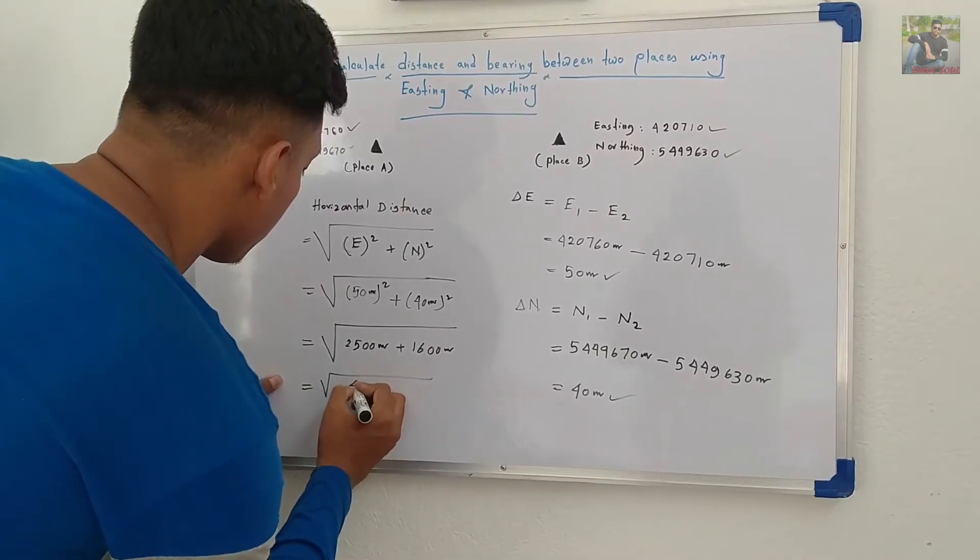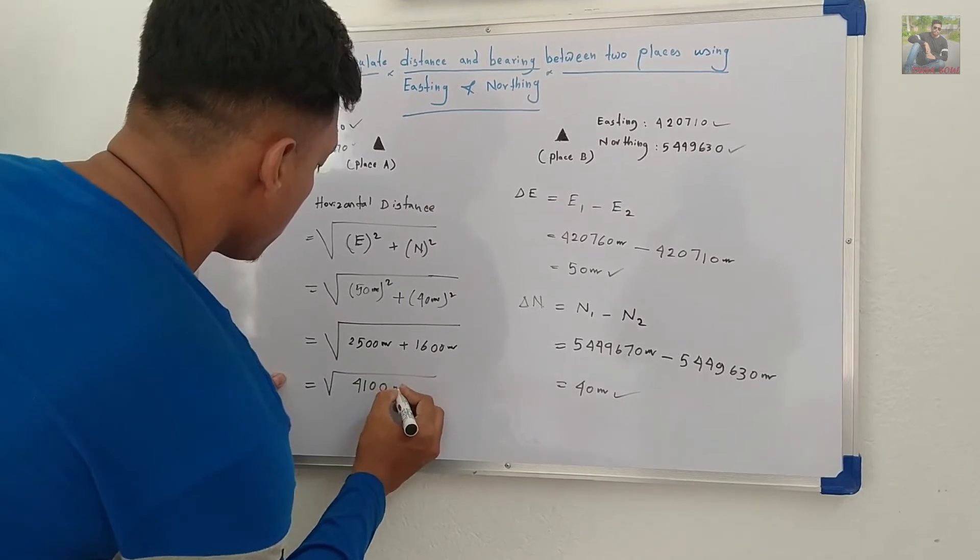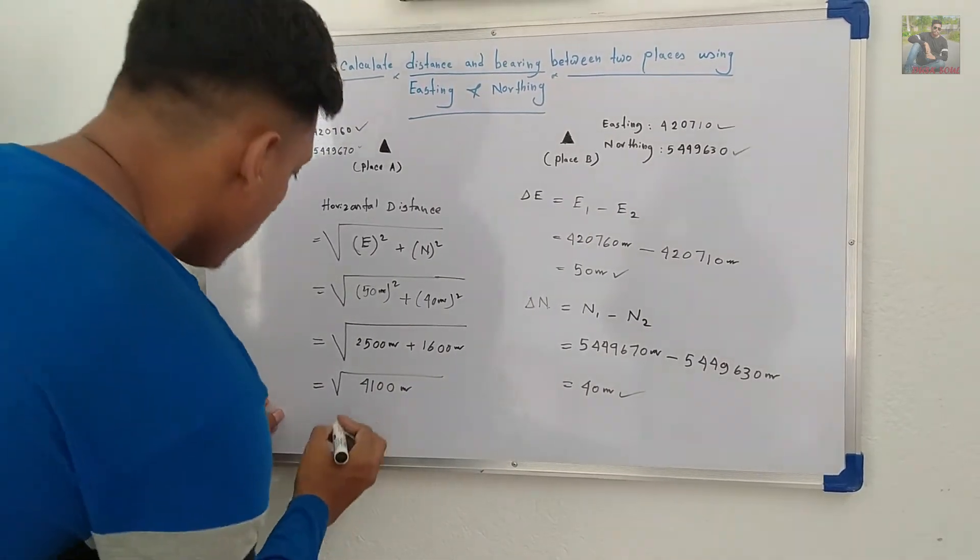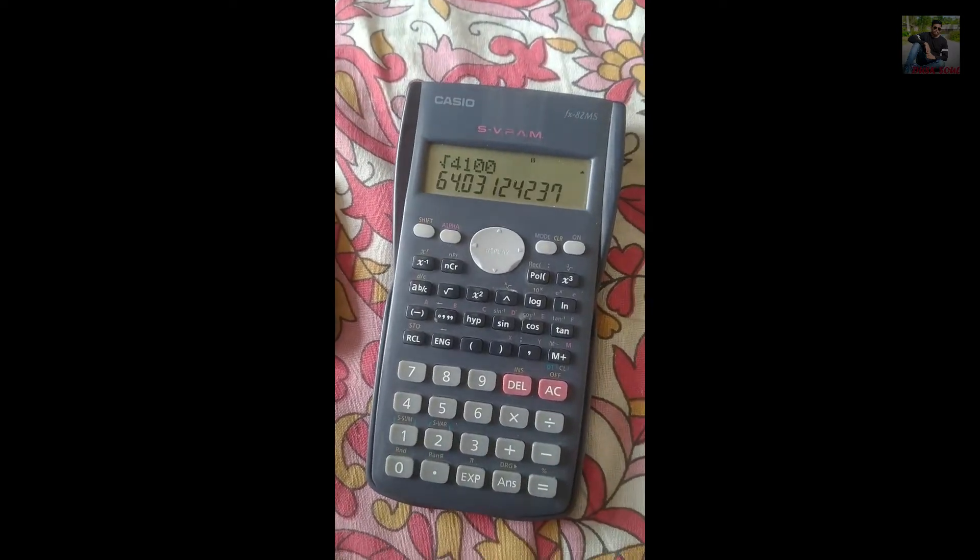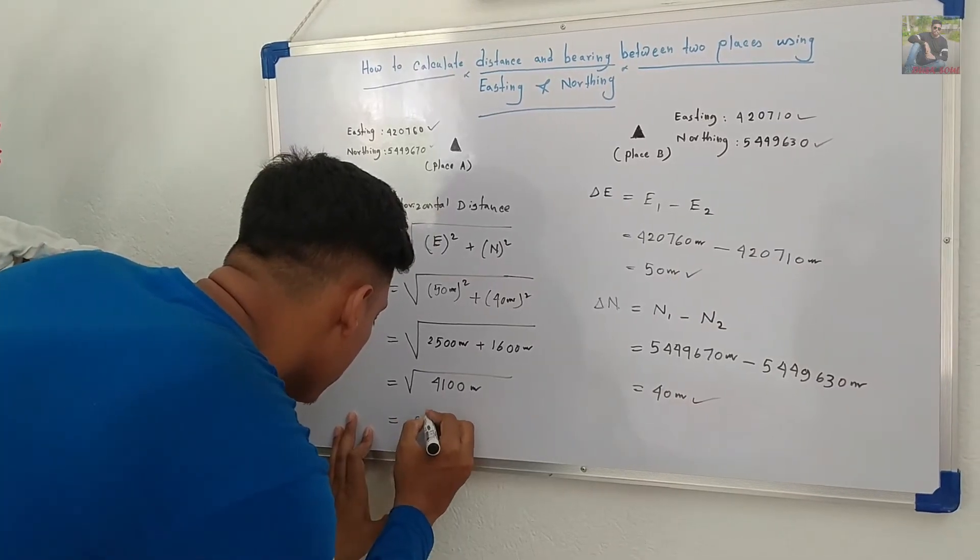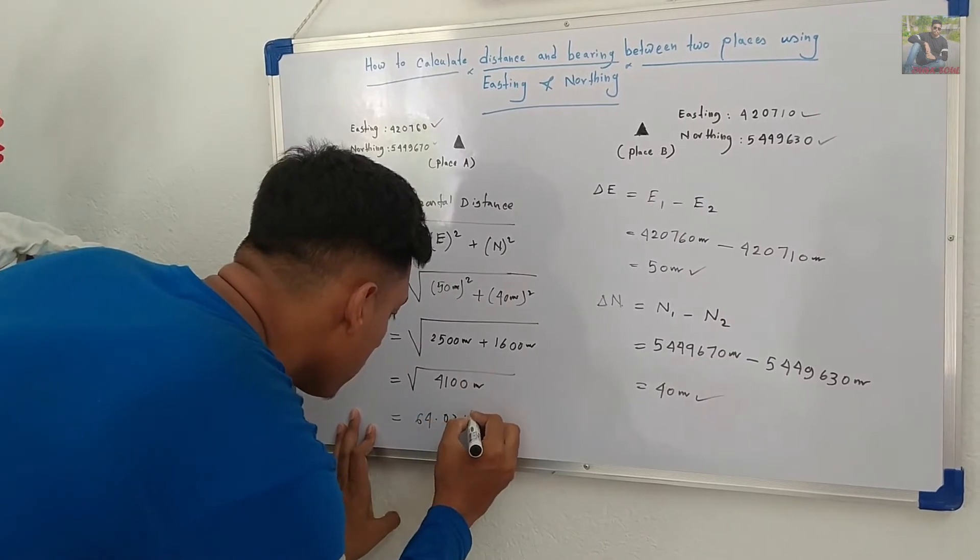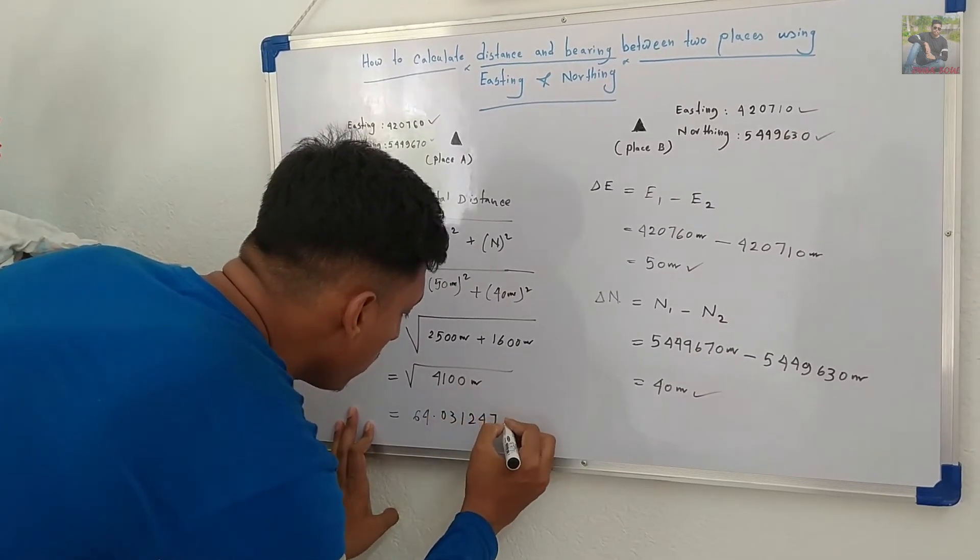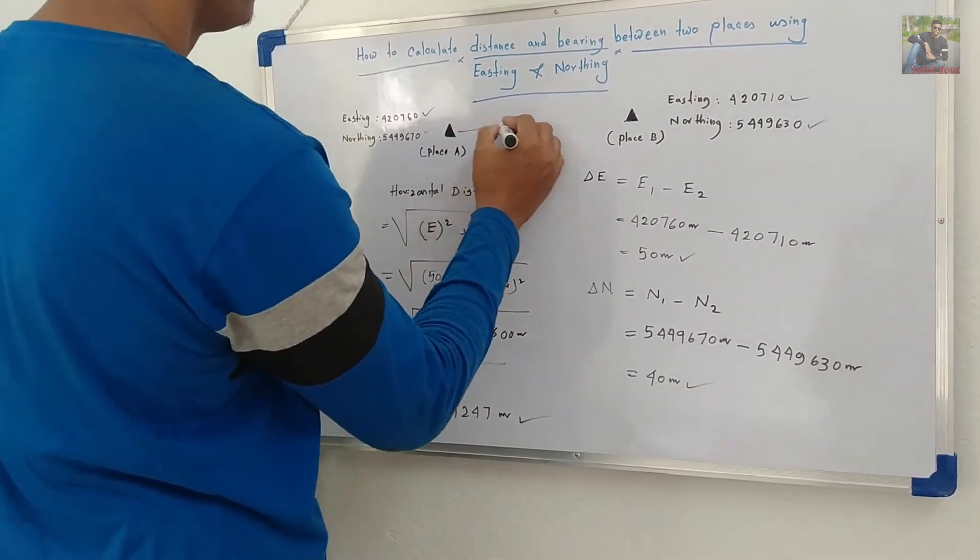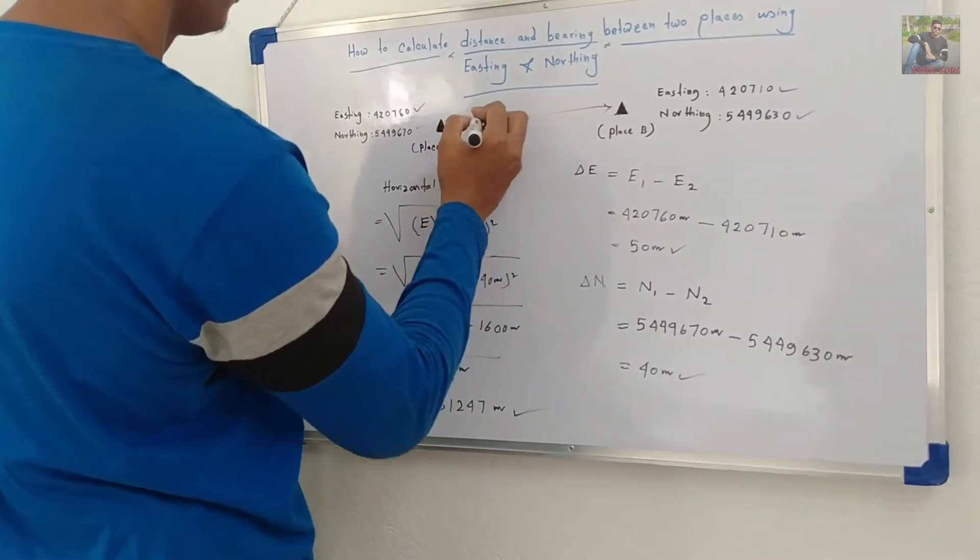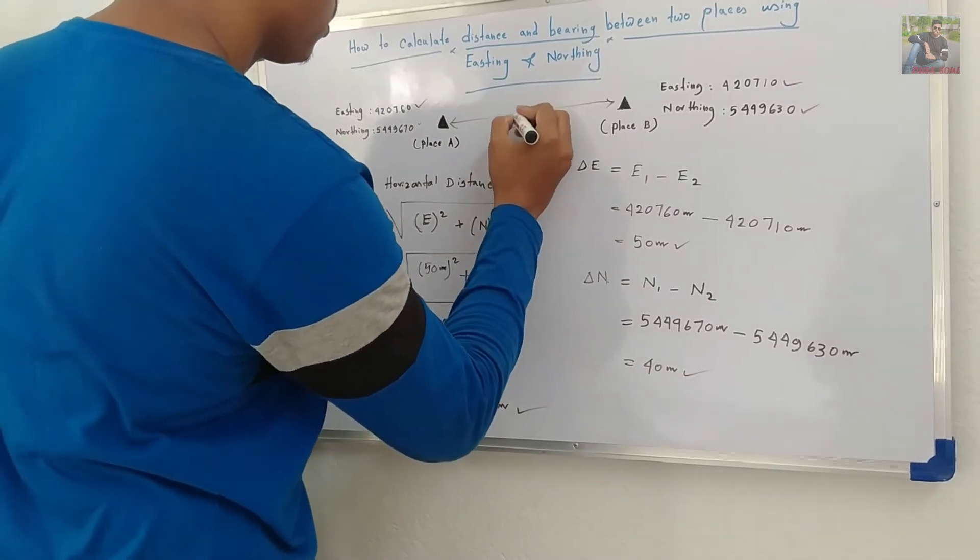Here, root of that. And the result is 64.03124237 meters. So, the horizontal distance between place A and place B is 64.03 meters.